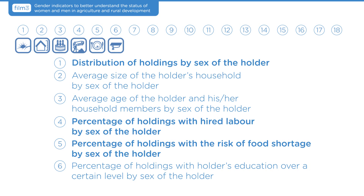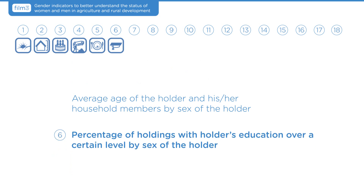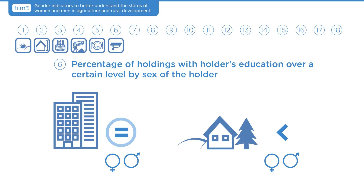Indicators 1, 4, 5, and 6 help to identify hidden discrimination against women, making evident gender differences in access to holdings, external labor, food, and education. Making a special reference to education, gender parity at primary and secondary school levels has been generally achieved in Europe and Central Asia. However, in some rural areas, enrollment, school attendance, and completion rates of girls are still lower than those of boys at all school levels, including vocational and specialized education.